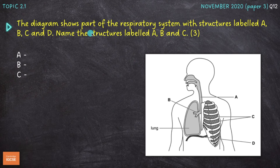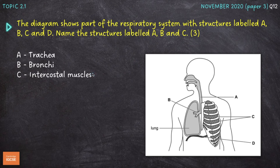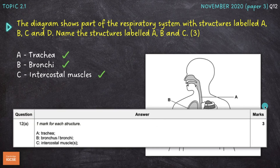Next question: the diagram shows part of the respiratory system, with structures labelled A, B, C and D. Name the structures labelled A, B and C for three marks. A is the trachea, or windpipe. B is the bronchi or bronchus — there are two bronchi, one leading to the left and one to the right lung. C is the intercostal muscles, the muscles that sit between the ribs and enable the ribcage to expand during inspiration. The mark scheme confirms: A for trachea, B for bronchus or bronchi, and C for intercostal muscles — an easy three marks.